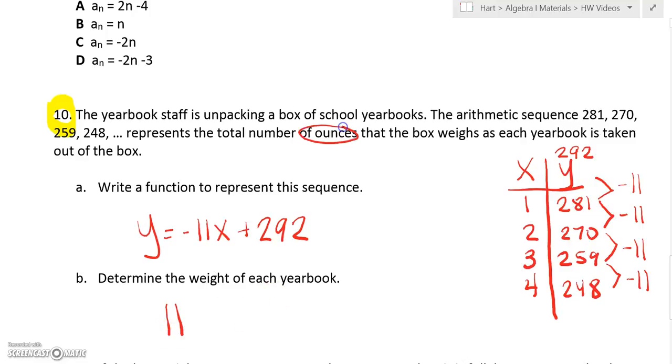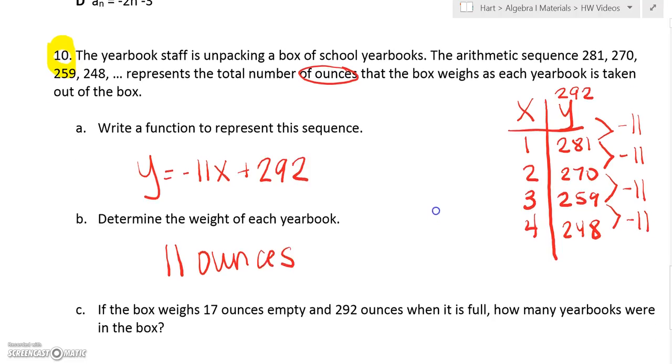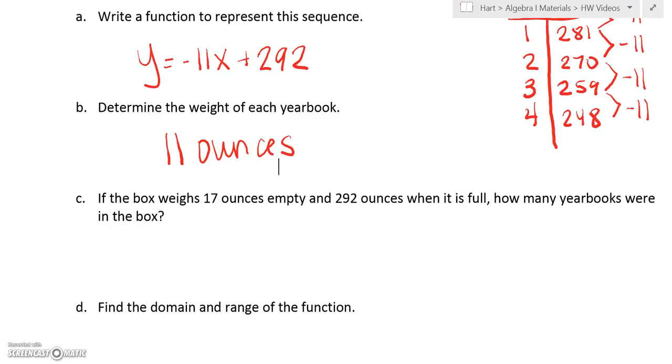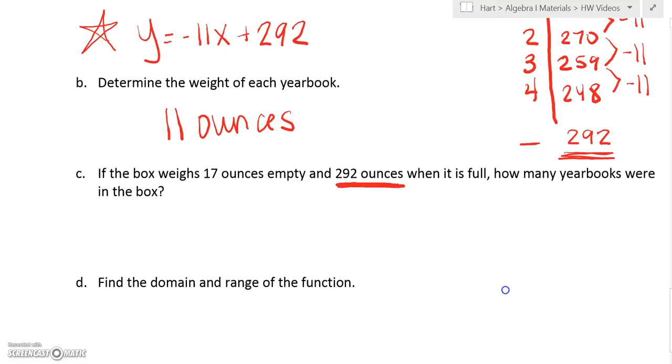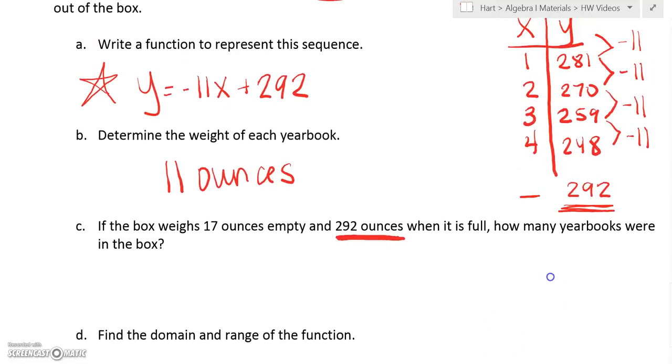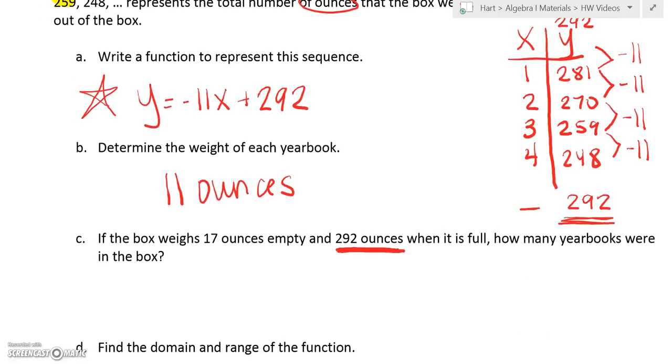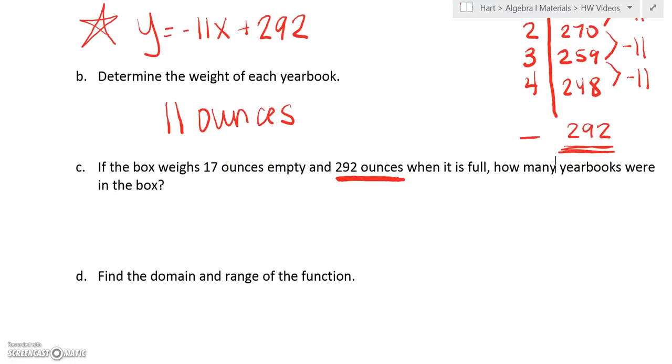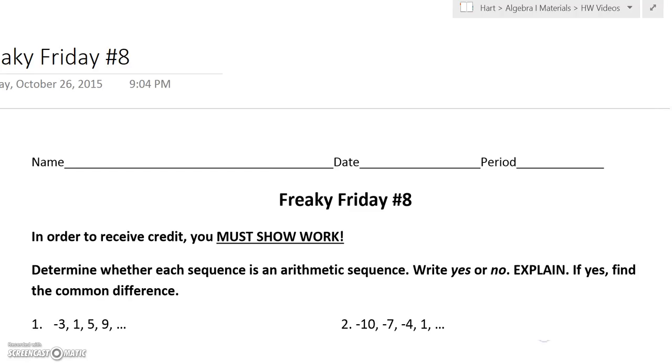Then it says if the box weighs 17 ounces empty and 292 ounces when it's full, how many yearbooks were in the box? We got to figure out how many yearbooks make it have 292. You can use the calculator if you put the equation you found into the calculator, then scroll until you see 292 on the y column and whatever you get there will be your answer. Then you have to find the domain and range. You're not going to be able to do that until you find the answer for C. This is due on Friday, so make sure you get it done by Friday.